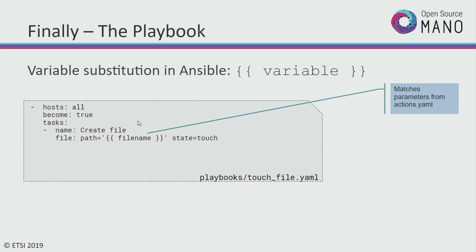The way variables work inside of Ansible is they follow a template language called Jinja. That uses two curly braces, the variable you want replaced, and two closing curly braces. And that again matches the variable that we're putting in through the actions.yaml.